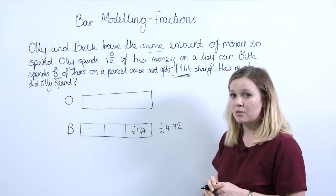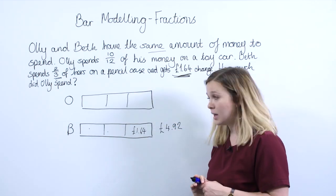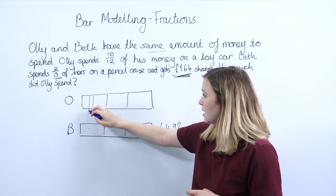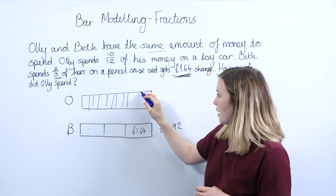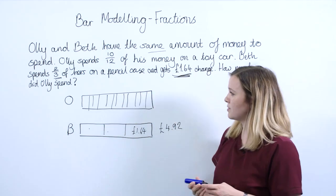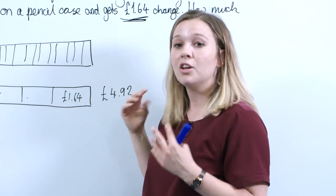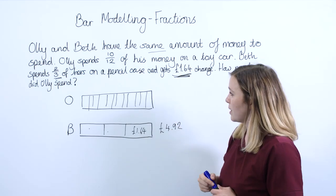So we know he spent 10/12 of his money, so now we're going to represent this on this bar. Now I can use my thirds to help me here to split this into twelve equal parts. So here I've got three - if I split each of these into four parts, that will help me represent these twelfths. To the pupils, obviously you'd want to get them to do it quite precisely so that you can show that those twelfths are equal parts of the bar.